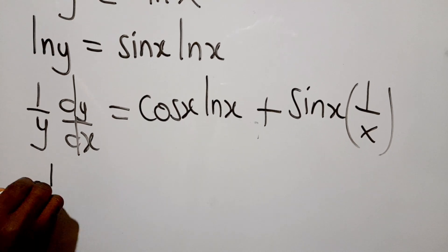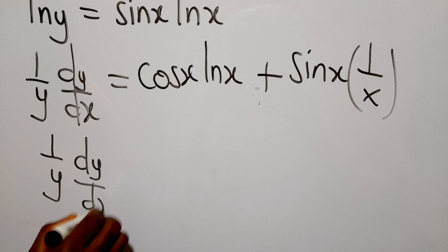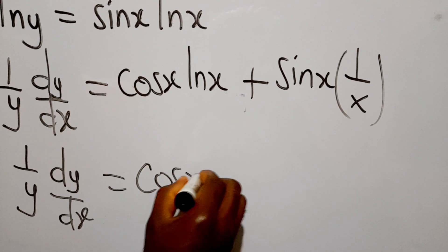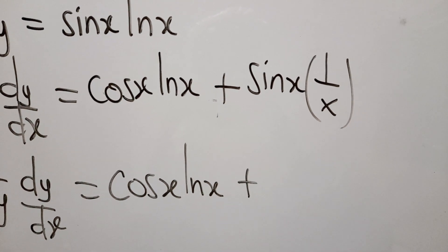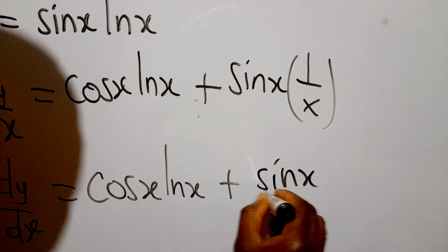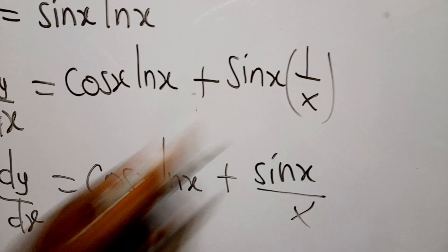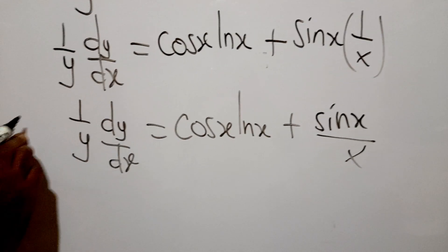So we can say (1/y)(dy/dx) = cos x ln x + (sin x)/x. That's how we multiply the sin x by 1/x.